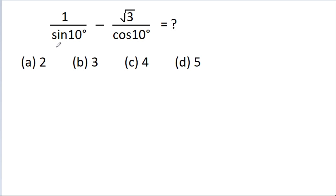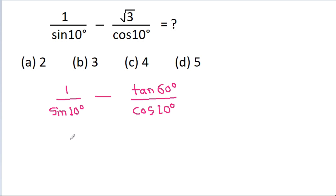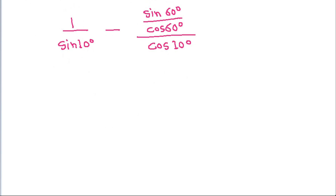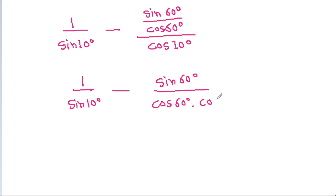In this video we have to find the value of 1 by sin 10 degree minus root 3 by cos 10 degree. So we have 1 by sin 10 degree minus root 3, and since root 3 equals tan 60 degree equals sin 60 degree by cos 60 degree, we write this as 1 by sin 10 degree minus sin 60 degree by cos 60 degree into cos 10 degree.